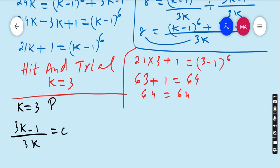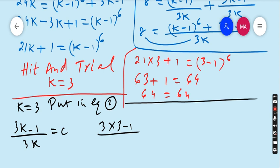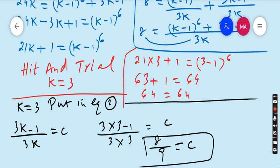This is equation number 2: (3k - 1) upon 3k equals c. Put the value of k=3 in equation number 2, so 3×3 minus 1 upon 3×3. 3×3 is 9, 9 minus 1 is 8. 8 upon 9 equals c.